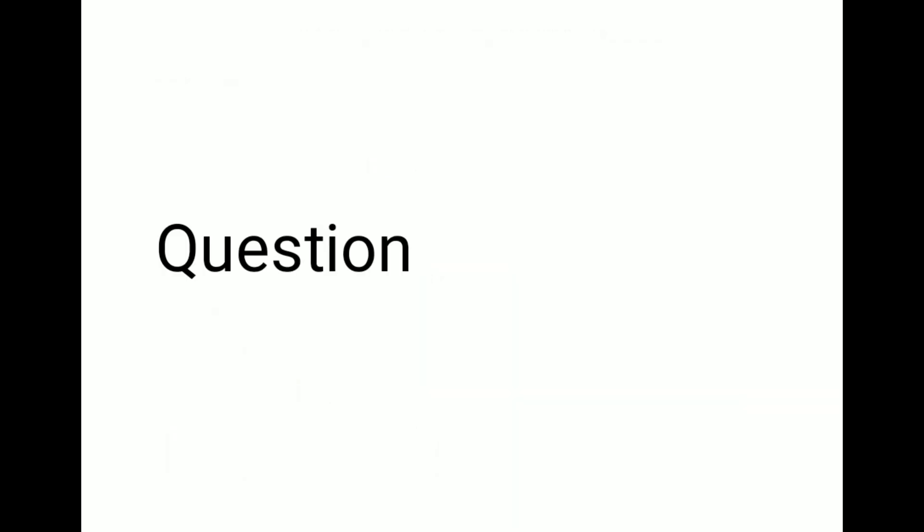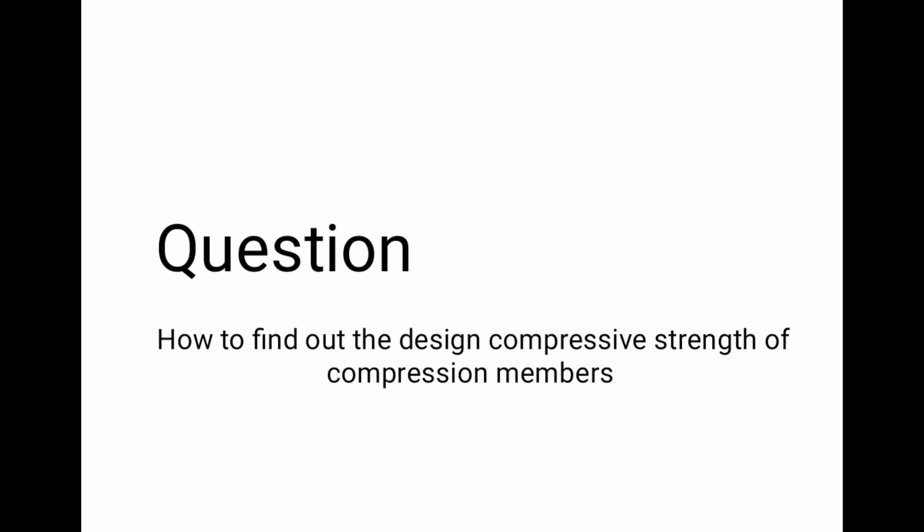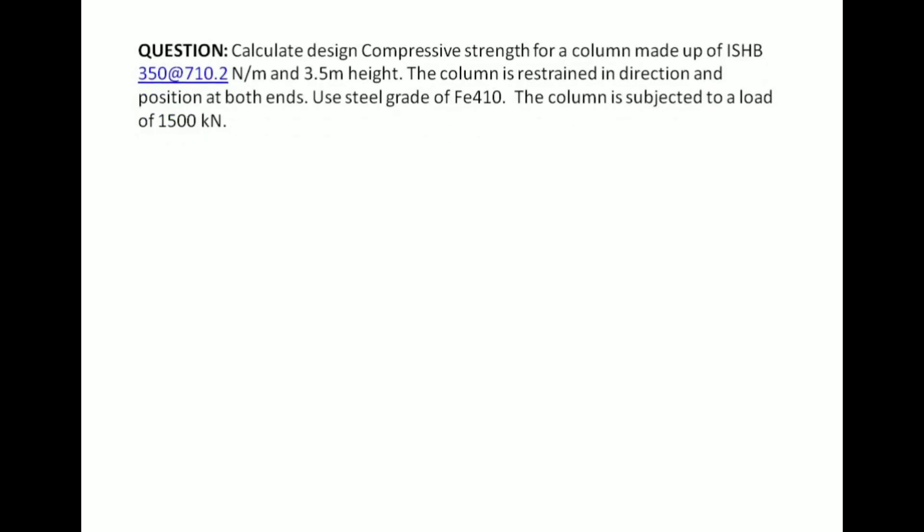Now we'll take a question on how to find the design compressive strength of such members. The question: calculate the design compressive strength for a column made up of ISHP 350 at 710.2 N/m, 3.5 m height. The column is restrained in direction and position at both ends. Use steel grade Fe 410. The column is subjected to a load of 1500 kN.